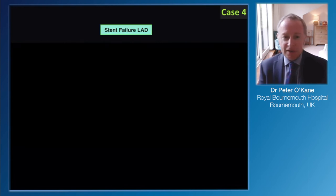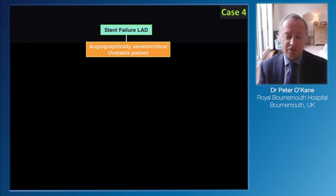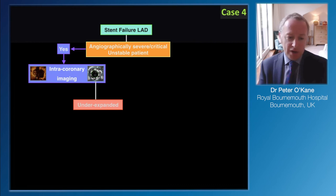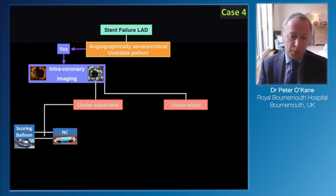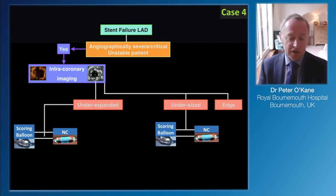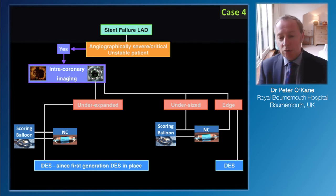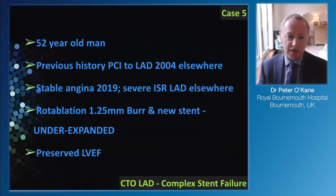With IVUS imaging we pre-dilate everything and get a really good result, confirmed on IVUS. Through the algorithm: stent failure presenting as a CTO, angiographically critical - not going to use pressure wire, go straight to imaging. Find under-expansion, treat with scoring and non-compliant. Find undersizing, treat with scoring and non-compliant balloon. Find new disease, cover with DES. Because it's a relatively old stent, we're going to cover the whole segment with drug-eluting stent and not worry about using DCB in this case.